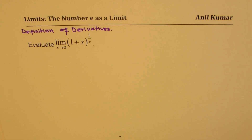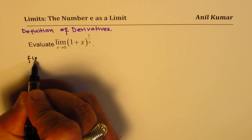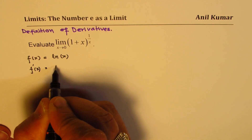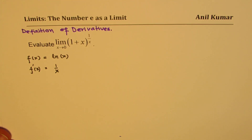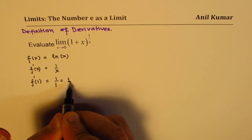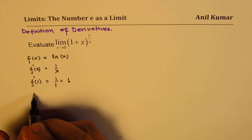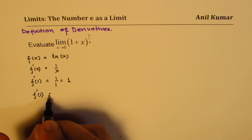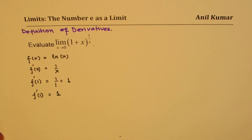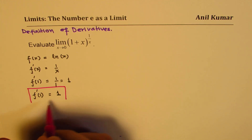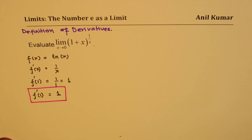I hope you recall the derivative for ln x. If my function f of x is equal to ln x, then the derivative f'(x) is basically 1 over x. The value of this at x equals 1 is 1 over 1, which is 1. So the derivative of ln x at x equals 1 is 1.